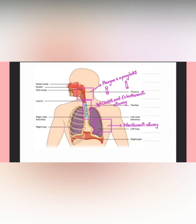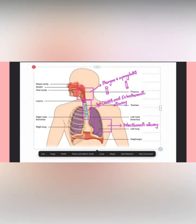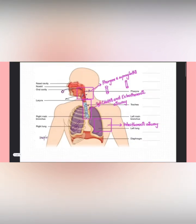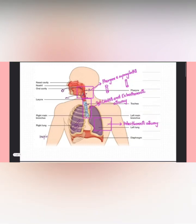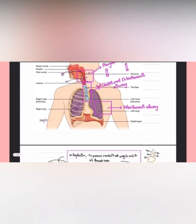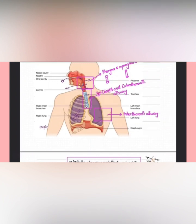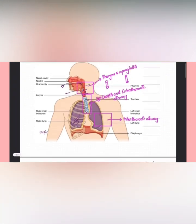The respiratory tract shows different parts of the airway: the airway within the lung, the airway outside the lung (extrathoracic airway), the bronchus, trachea, supraglottic part, subglottic part, the pharynx, and the nostrils. On inspiration, negative pressure is created throughout this tract while outside pressure is zero, so air goes in. On expiration, there is plus one pressure in the airway, so air goes out.